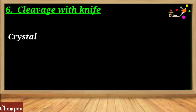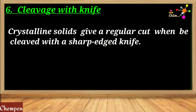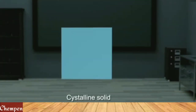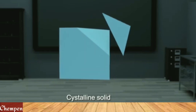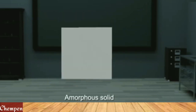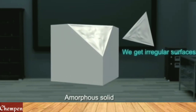The next point of difference is cleavage with a knife. When crystalline solids are cut with a sharp-edged tool like a knife, the surface obtained is smooth and regular — giving a clean cut. Whereas in amorphous solids, cutting gives an irregular surface; the surface obtained after cutting is not regular or smooth.